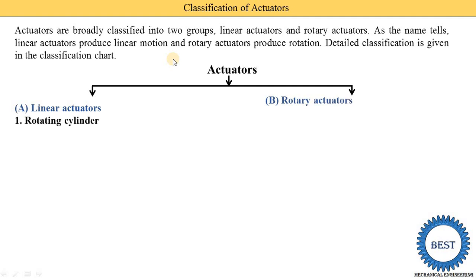First, let's understand the various types of linear actuators. The first type is the rotating cylinder type. You might think that since the cylinders rotate, why is this called a linear actuator? In this reciprocating-type arrangement, the cylinders are rotated, and the oil inside the cylinders moves the pistons. This reciprocating motion of the piston is converted into linear motion — that's why it comes under linear actuators.